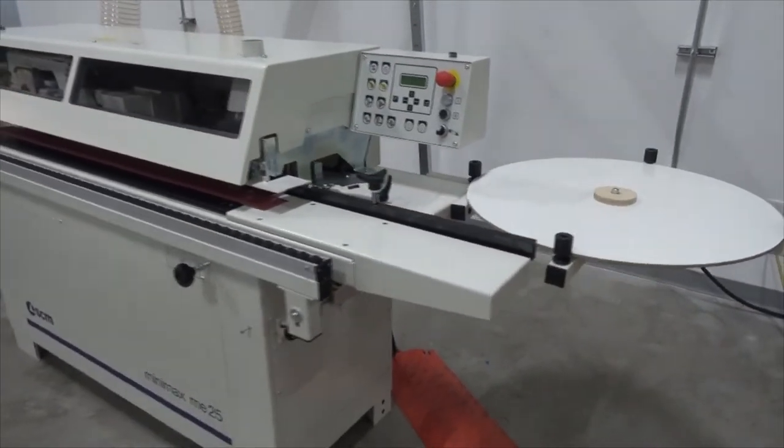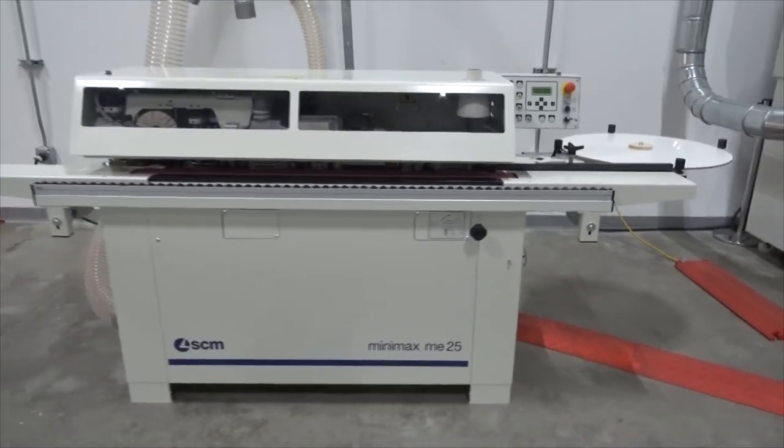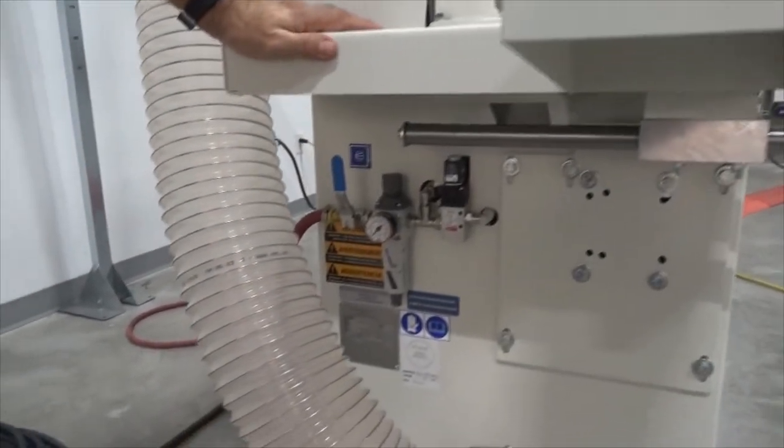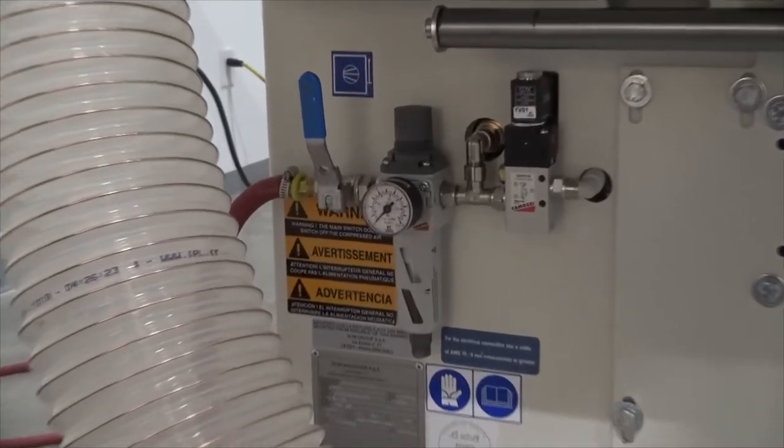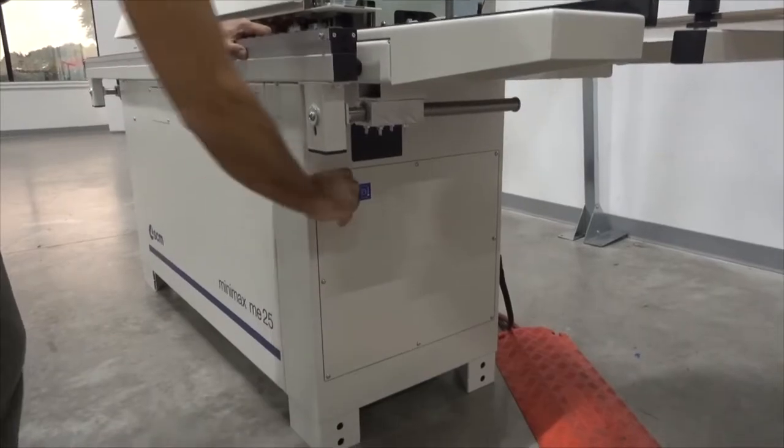Now it's time to hook up power and air. You will want about 7 to 8 bar of shop air pressure hooked to the onboard regulator, which is set to 6.5 bar. If the pressure falls below 4 bar, the machine will not start. Turn on the main power switch.